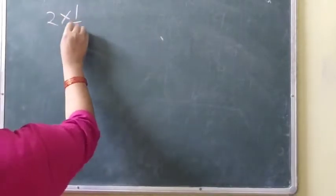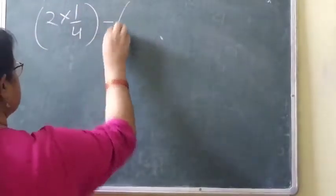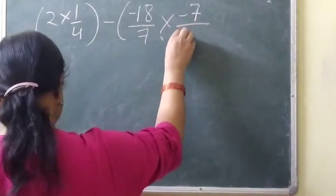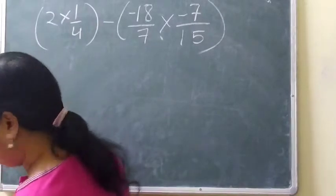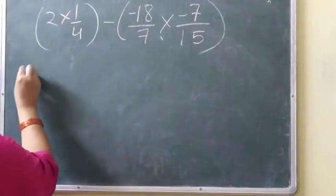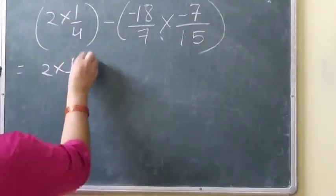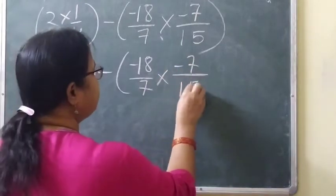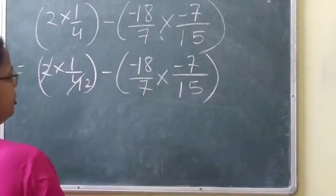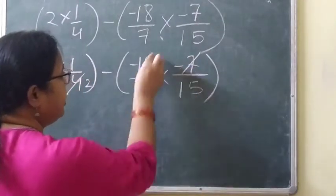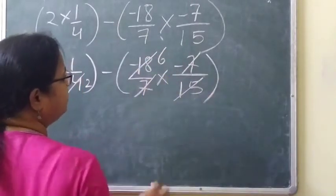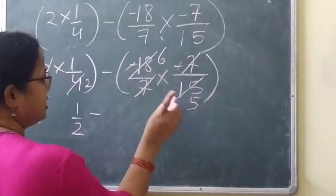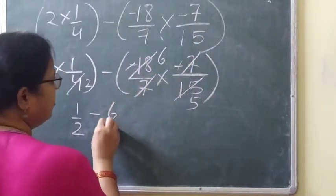Now the next question: 2 into 1 by 4, then minus, inside the bracket minus 18 by 7 into minus 7 by 15. Here we can cancel: 2 into 2 is 4. Then 7 and 7 we can cancel. 18 and 15 we can also cancel by 3 — three 6s are 18, three 5s are 15. So at last we have 1 by 2 minus; this minus and this minus gives plus, so plus 6 by 5.